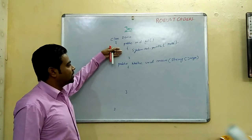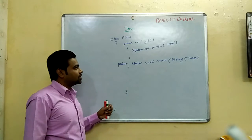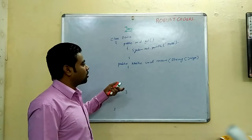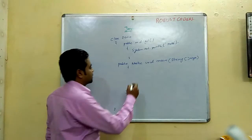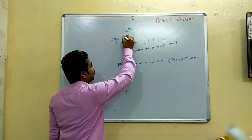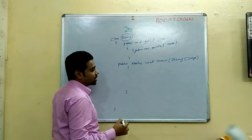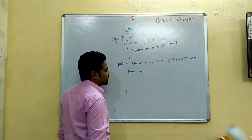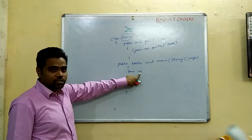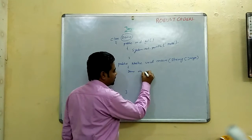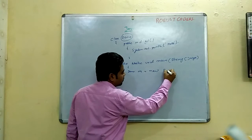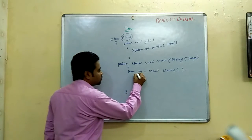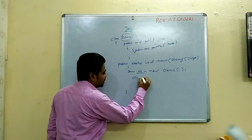This method is called with the help of an object. We will see how to create objects, how do we build an object, and what we discuss about objects. So we will create a class Demo, and we have an object with a reference variable - Demo obj equal to new Demo.